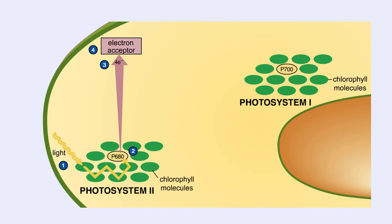The P680 molecule in photosystem II now is deficient of four electrons. It fills this electron hole by capturing four electrons from two molecules of water. In the process of taking four electrons from water, water is split into four protons and one molecule of oxygen gas.